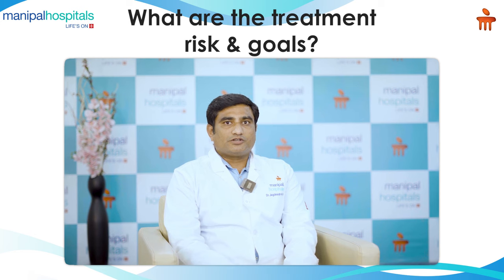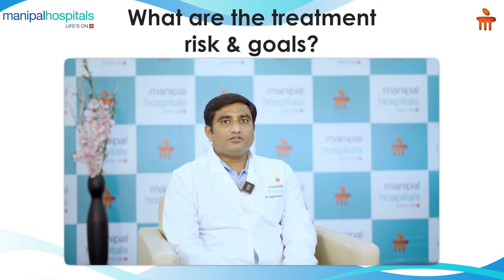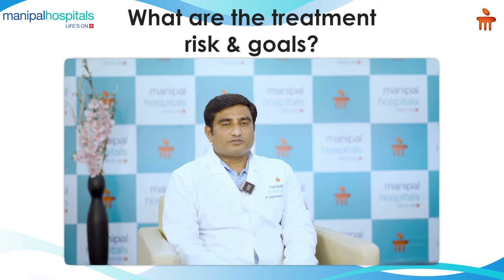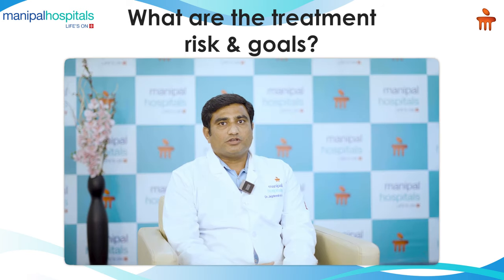What are the treatment goals for diabetes? It is mainly to reduce the risk of microvascular and macrovascular complications. Microvascular includes retinopathy, neuropathy, and nephropathy. Macrovascular includes heart attack, heart failure, stroke, and peripheral vascular disease, which can lead to amputation and significant morbidity.